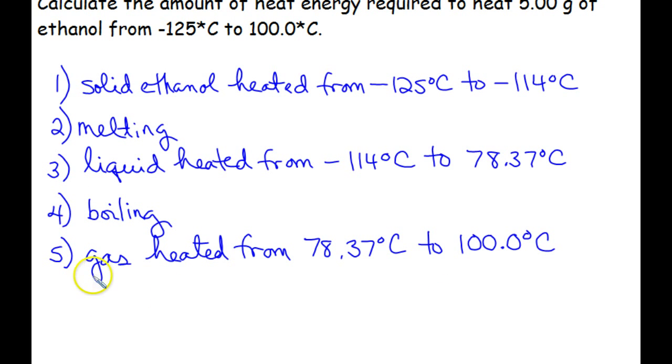So each one of these steps represents its own separate calculation. And then the last step is always to sum them, get the Q total. So we're going to look at each calculation individually, and then we'll sum them.